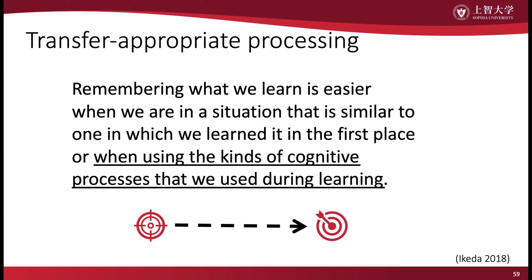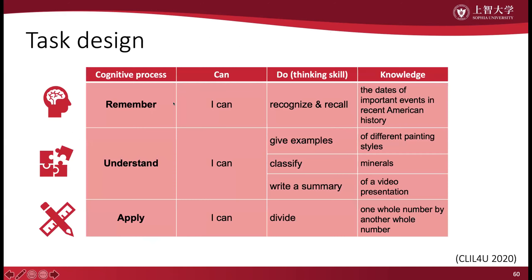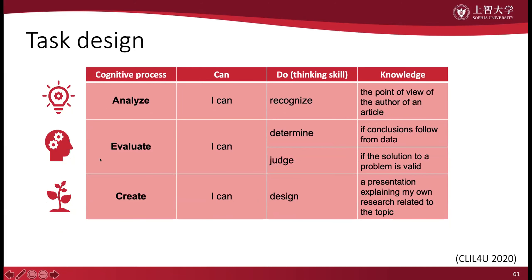Our task design should help support the development of general competences, and we should be able to make what are called 'can-do statements' for each of the cognitive processes in Bloom's taxonomy — the concrete skills students can acquire from the task. This starts with remembering: 'I can recognize and recall the dates of important events in recent American history.' Understanding: 'I can write a summary of a video presentation.' Applying: 'I can divide a whole number by another whole number.' Analyze: 'I can recognize the points of view of the author from an article.' Evaluate: 'I can determine if conclusions follow from the data.' And create: 'I can design a presentation explaining my own research related to the topic.'